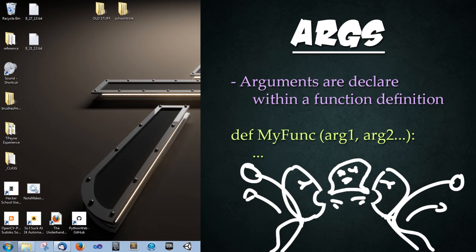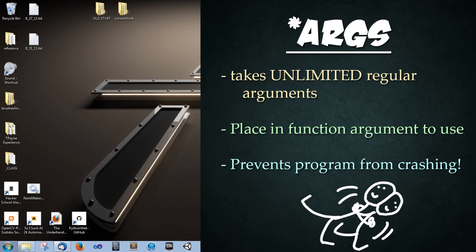Alright, so arguments. We've discussed in the past how functions take in arguments. What we'll be discussing today is how to take an unlimited number of arguments or keyword arguments. We use *args to take an unlimited number of regular variables or arguments. We use this within the function definition as a preventative measure to keep the program from crashing if we don't know how many arguments are going to be passed in. This is used in C++ and other programming languages as well.